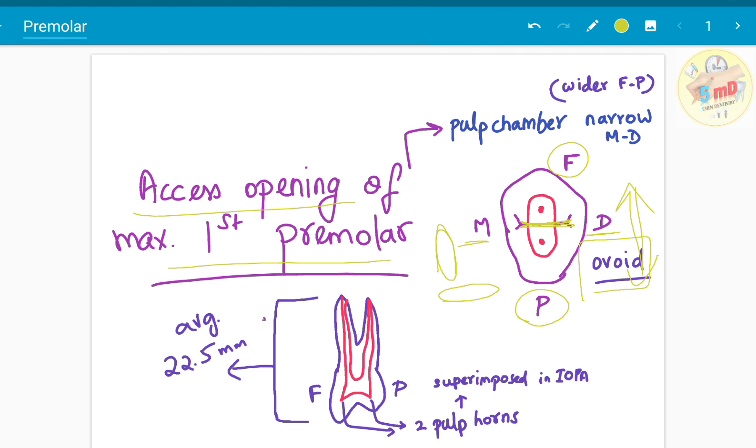The average length of the premolar is 22.5 mm and when you locate the canals in the IOPA, the canals are usually superimposed in IOPA. But two pulp horns are present, which you have to keep in mind.